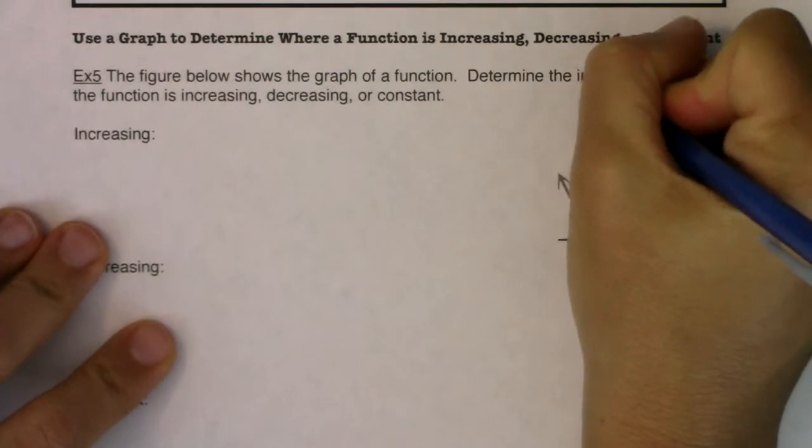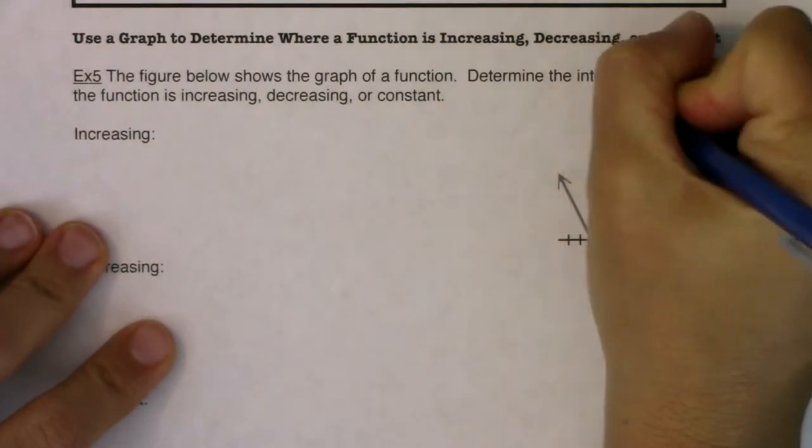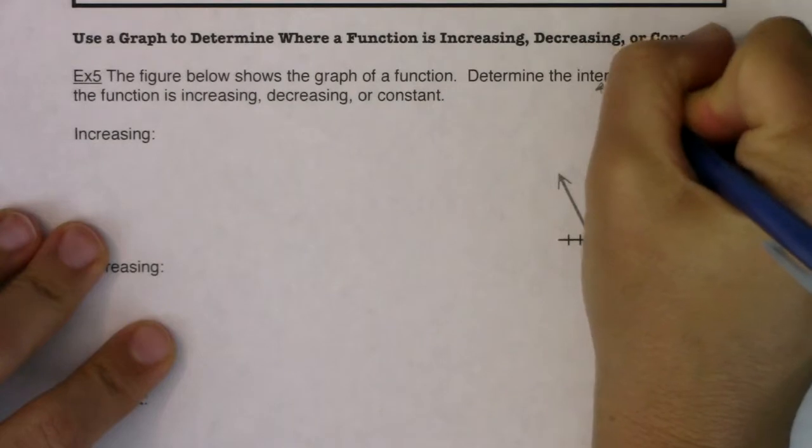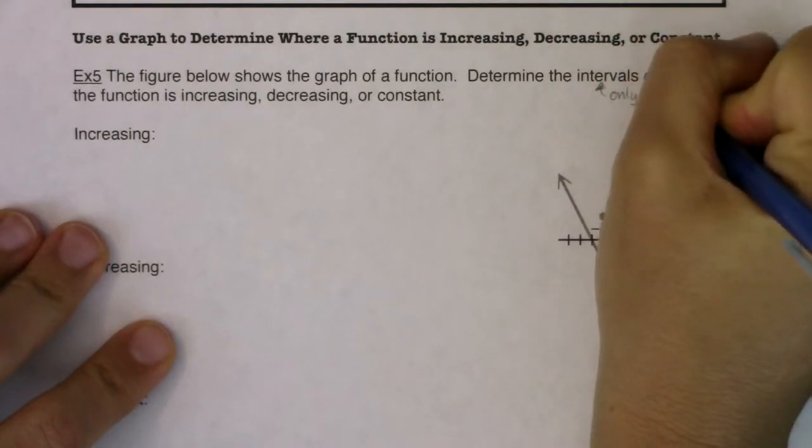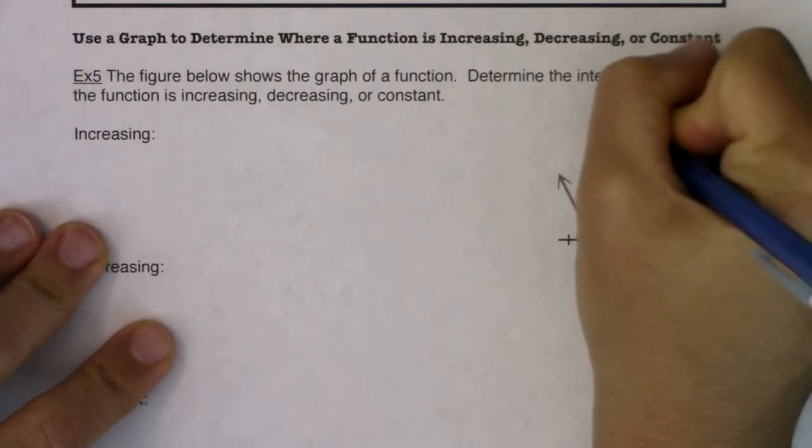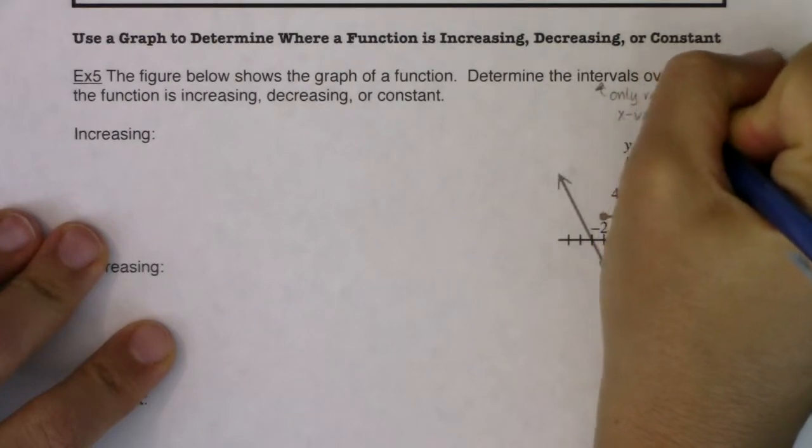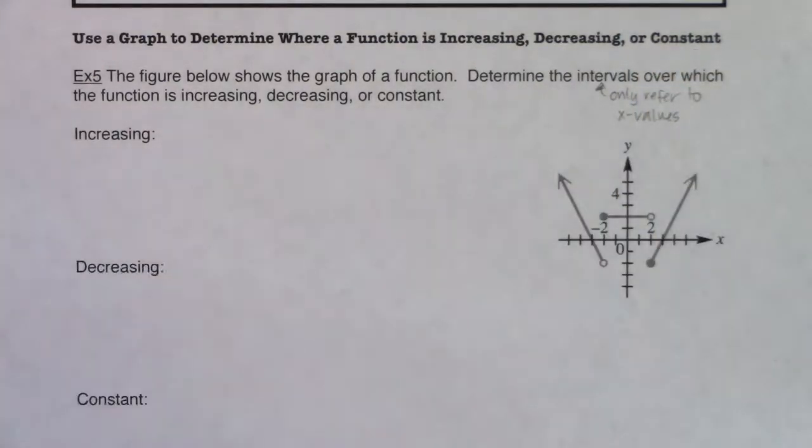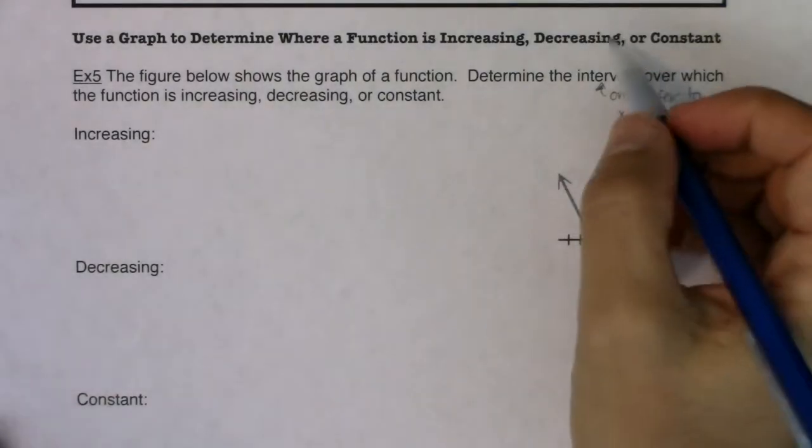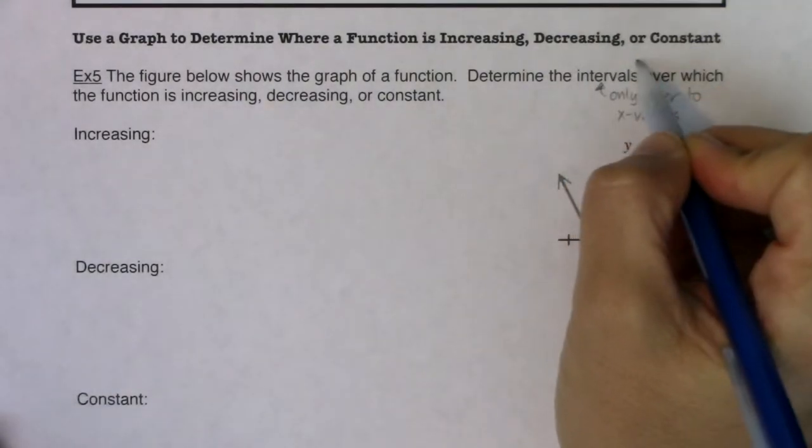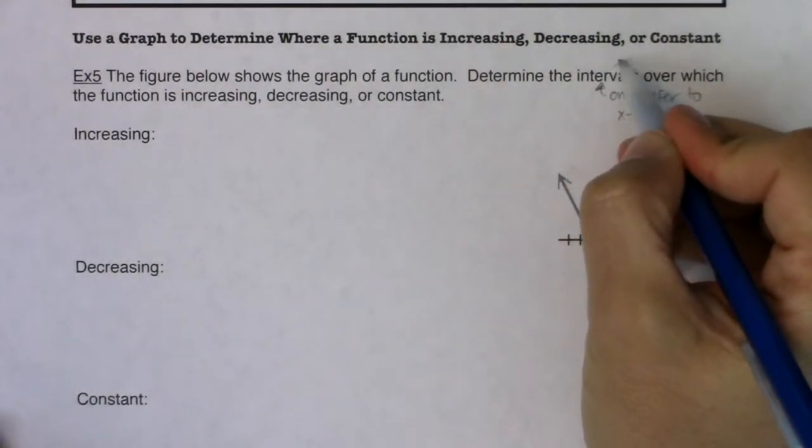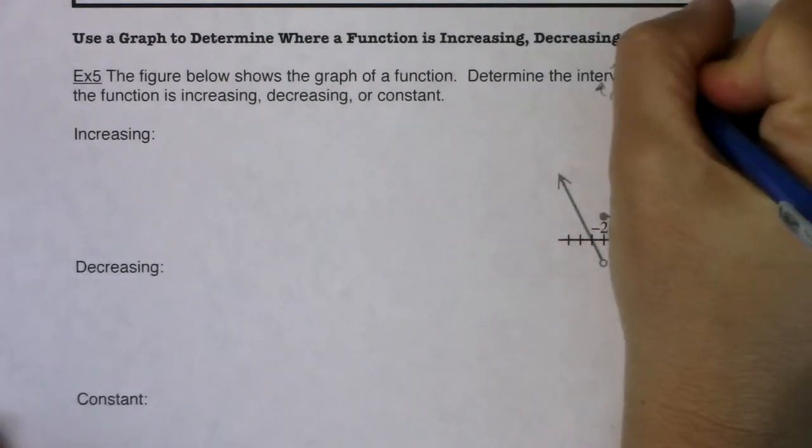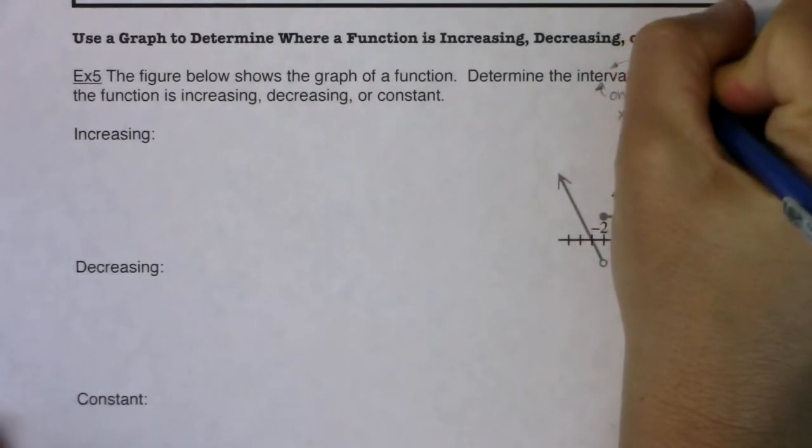When you determine the intervals for increasing, decreasing, or constant, you only refer to x values. We're asking which values in our domain, for which x values in our domain is our function increasing, decreasing, or constant. So we're only going to refer to x values. We're going to write some intervals, so you know you're going to go low, high.